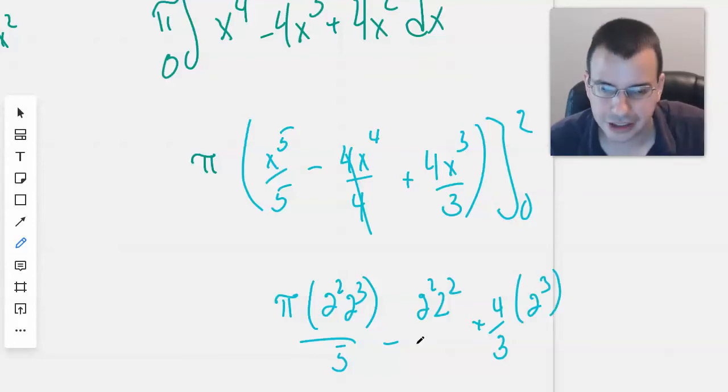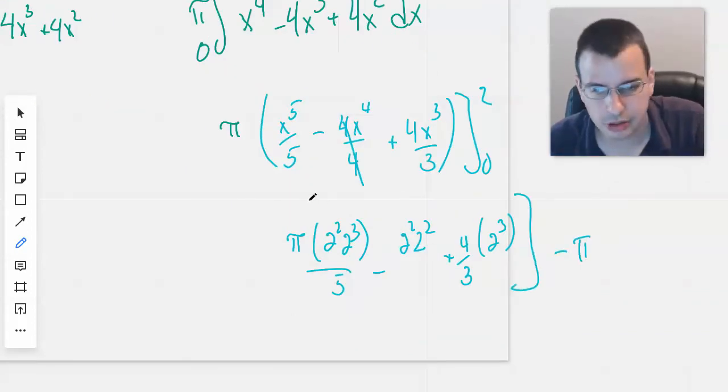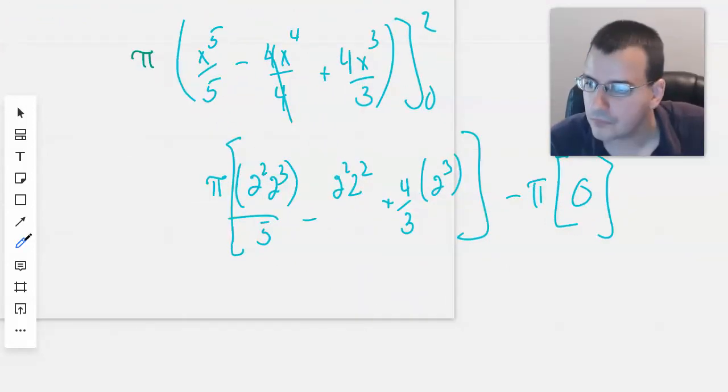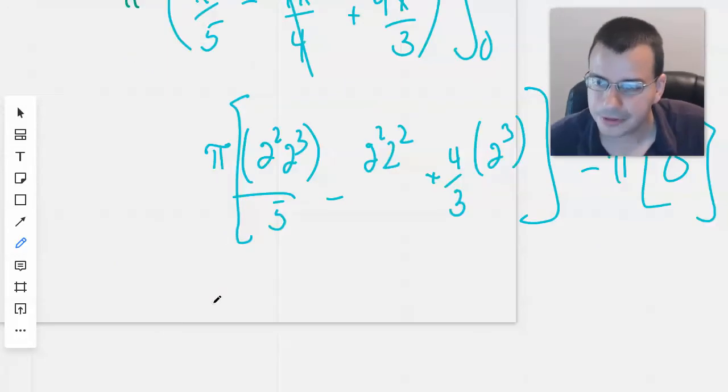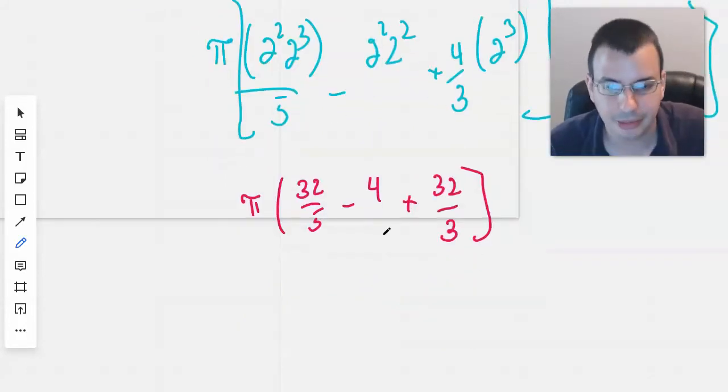And so what we have here... And then we will subtract off here. Parenthesis. Pi. There's an x in every one of these. So when we plug in 0, it'll become 0. So now we have pi. This will be 4 times 8, which will be 32 over 5 minus 4. Plus this will be 4 times 8, which is 32 over 3.